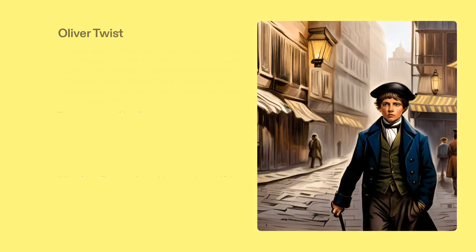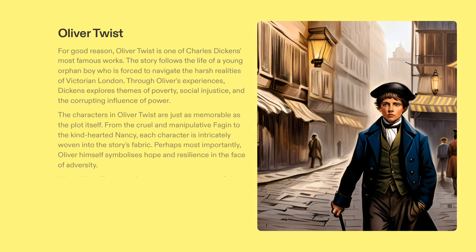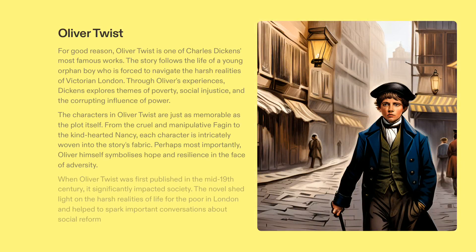Charles Dickens' Oliver Twist is an iconic work, narrating the life of a poor orphan, Oliver, and the hardships of life in Victorian London. Oliver's experiences reflect the themes of poverty, social injustice, and the corrupting influence of power. Dickens' characters, from Fagin and his manipulation to Nancy and her kindness, are integral to the story, and Oliver symbolizes resilience and hope in the face of adversity. The book's publication sparked conversations about social reform, as it highlighted the realities of life for the poor in London.